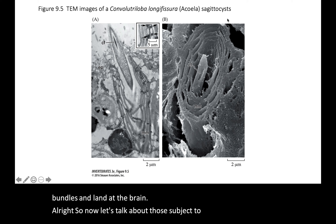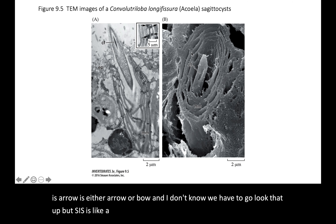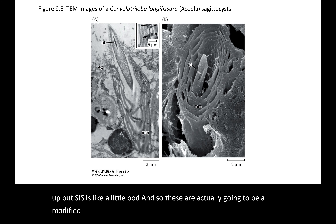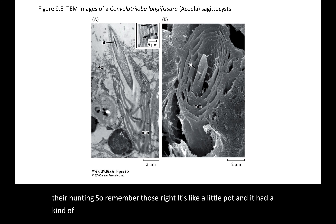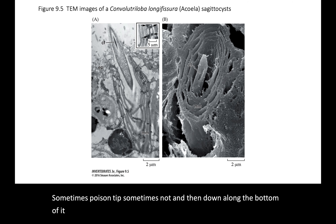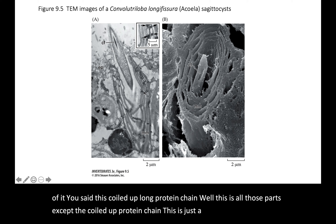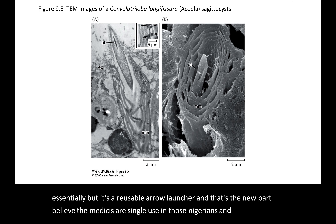Now let's talk about sagittocysts. 'Sagitta' means arrow, and 'cyst' is a little pod. These are actually a modified version of the nematocysts that cnidarians use for hunting — a little pod with a barbed arrow, sometimes poison-tipped, with a coiled protein chain. Sagittocysts have all those parts except the coiled protein chain. They're essentially a little arrow launcher, but they're reusable — nematocysts in cnidarians are single-use, while these are multi-use.